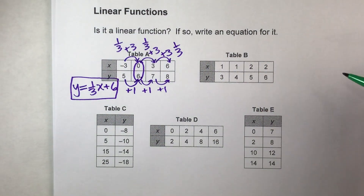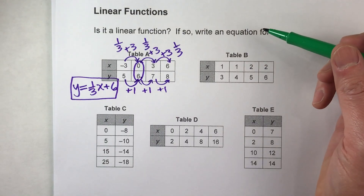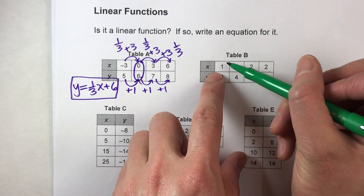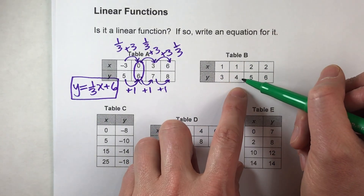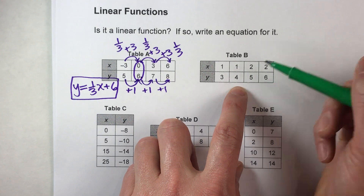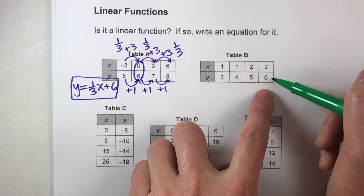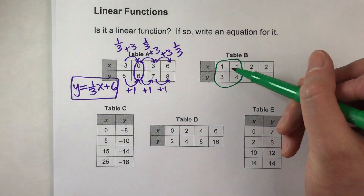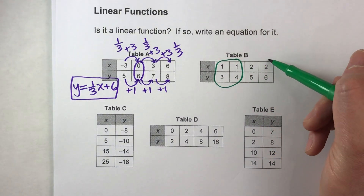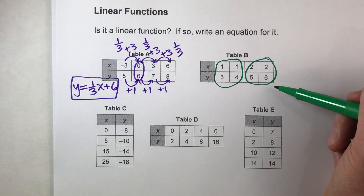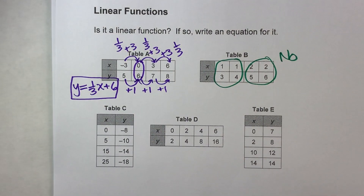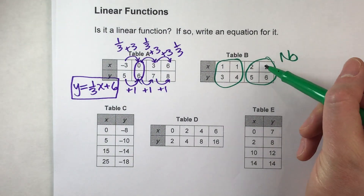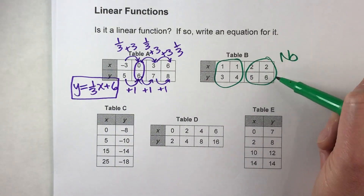Let's do table B. First, let's check to see if it's a function. For x, an input of 1 gives us a 3, but input of 1 again gives us a 4. Input of 2 gave us a 5, and input of 2 gave us a 6. We've got an input of 1 giving us two different outputs, and an input of 2 giving us two different outputs. This is not a function, so this is definitely not a linear function.